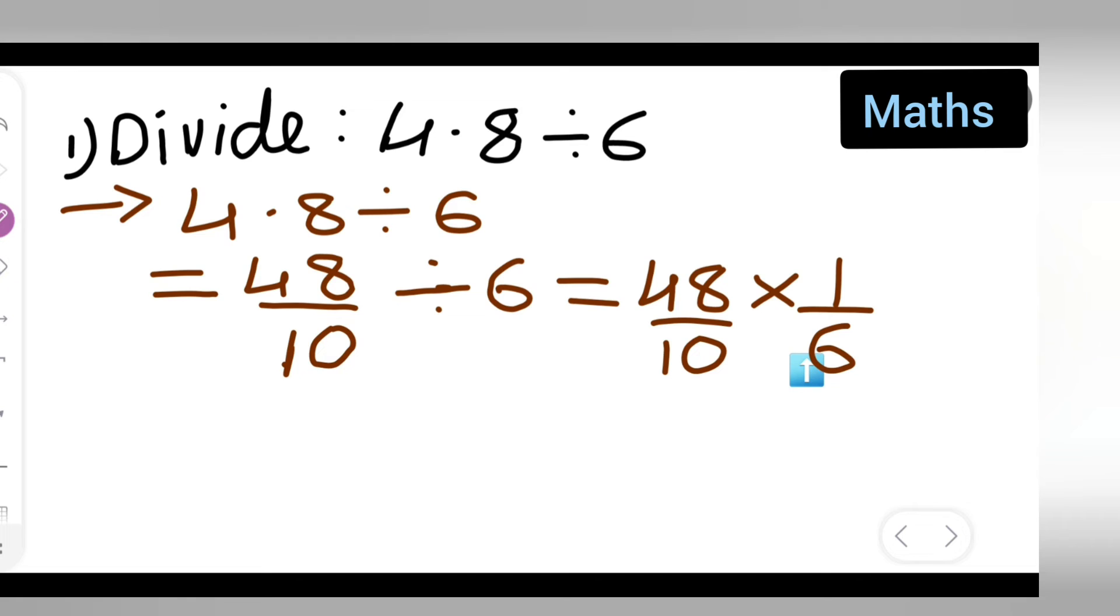1 upon 6. Reciprocal of 6 is 1 upon 6. Now I can cancel the terms. 6 ones are 6, then 6 eights are 48, right? So your answer is equal to 8 upon 10.